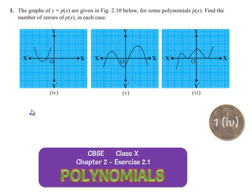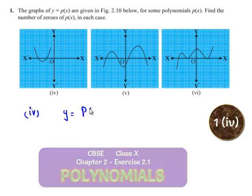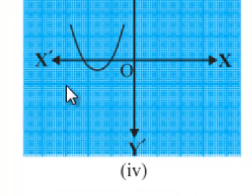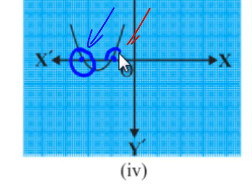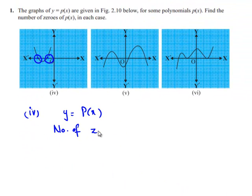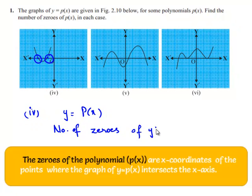Now, coming to the fourth case, the graph y is equal to p of x is intersecting the x-axis at two points. This is one point and this is another point. Therefore, the number of zeros of y is equal to p of x is 2, as it is intersecting the x-axis at two points.